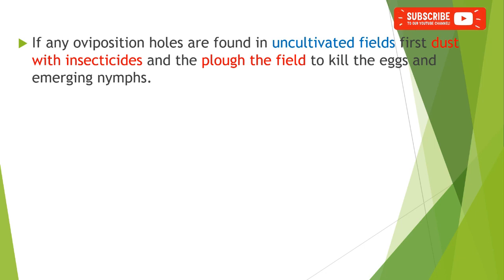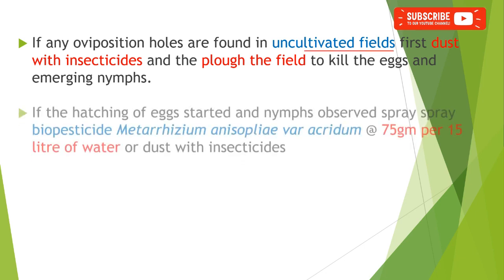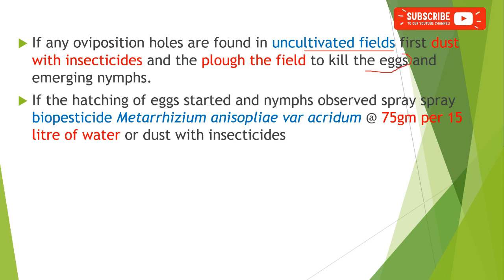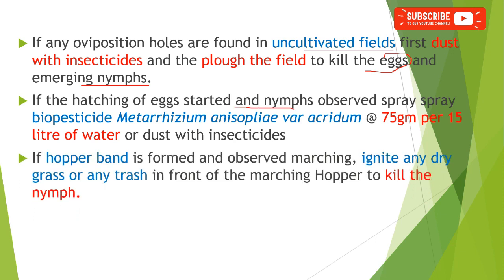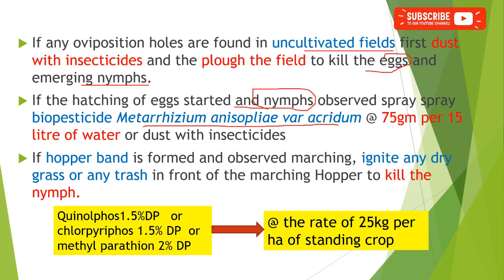If any egg pod holes are found in uncultivated fields, first dust with insecticides and then plow the field, which kills the eggs as well as emerging nymphs. If hatching of eggs has already started and nymphs are observed on the field, spray the biopesticide Metarhizium anisopliae var. acridum at the rate of 75 grams per 15 liters of water, or dust with Phenthoate 1.5 percent, Chlorpyrifos 1.5 percent, or Methyl Parathion 2 percent dust formulation at the rate of 25 kg per hectare.